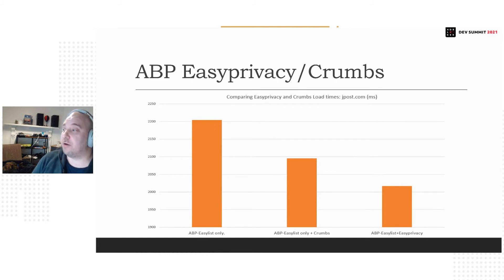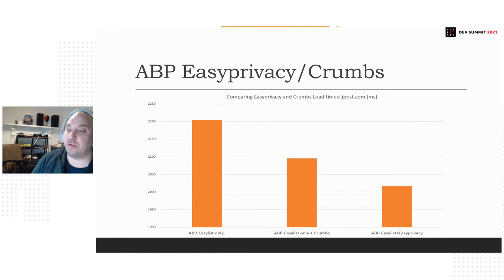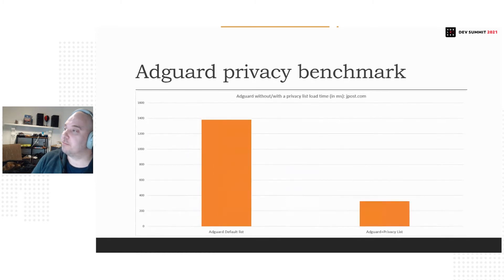We're looking at quite a good improvement if we're including EasyPrivacy as a default list — which is what we're aiming for: to not treat EasyPrivacy as just a companion list, but actually part of Adblock Plus or any other extensions. We find that privacy should be important for users. With AdGuard, I saw a huge increase — about a 124% increase just including the privacy list as a default, saw a huge increase in performance load times.